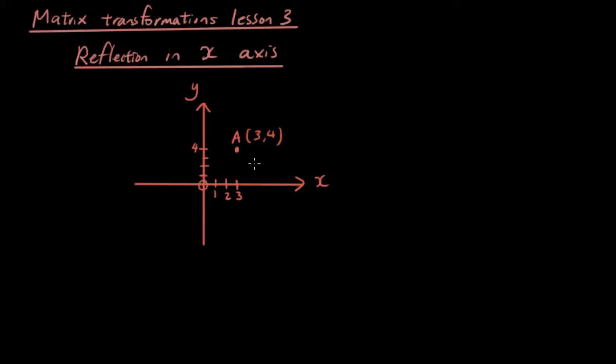And it has the coordinates 3, 4. Now let's say we want to reflect point A in the x-axis. What happens is it will be reflected so that its image will be over here. Let's call it A dash. And the coordinates is 3, -4. So we have reflected this point in the x-axis.